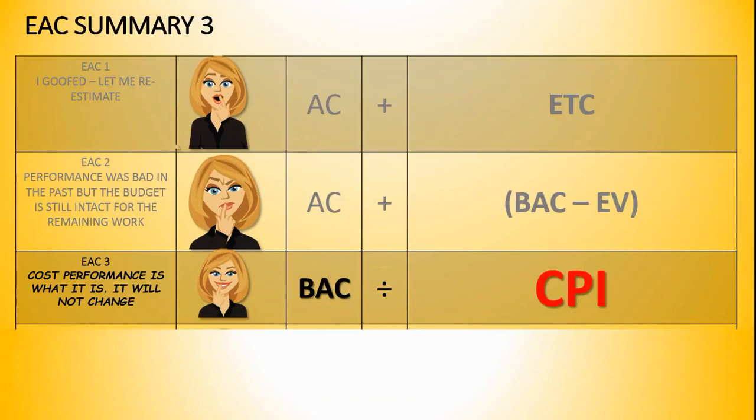Let's take a look at this third one. This one means what is of primary concern is cost performance. Cost performance is what it is. It will not change. And that's why we factor in the CPI, cost performance index. So we take our budget, and we say, based on the performance, this is what our EAC is going to be. BAC divided by CPI.